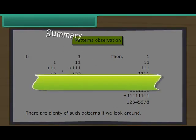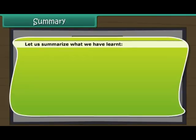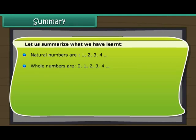Summary. Let us summarize what we have learnt. Natural numbers are 1, 2, 3, 4. Whole numbers are 0, 1, 2, 3, 4.